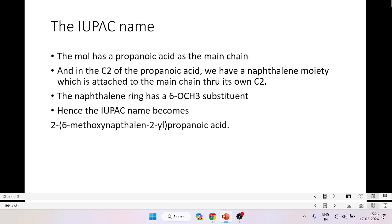So that's how this substituent becomes, and therefore the IUPAC name - what is the IUPAC name? The molecule has a propanoic acid main chain. The C2 in the propanoic acid has a naphthalene moiety which is attached to the main chain through its own C2. The naphthalene ring has a 6-methoxy substituent additionally, and hence the IUPAC name becomes 2-(6-methoxynaphthalen-2-yl)propanoic acid.